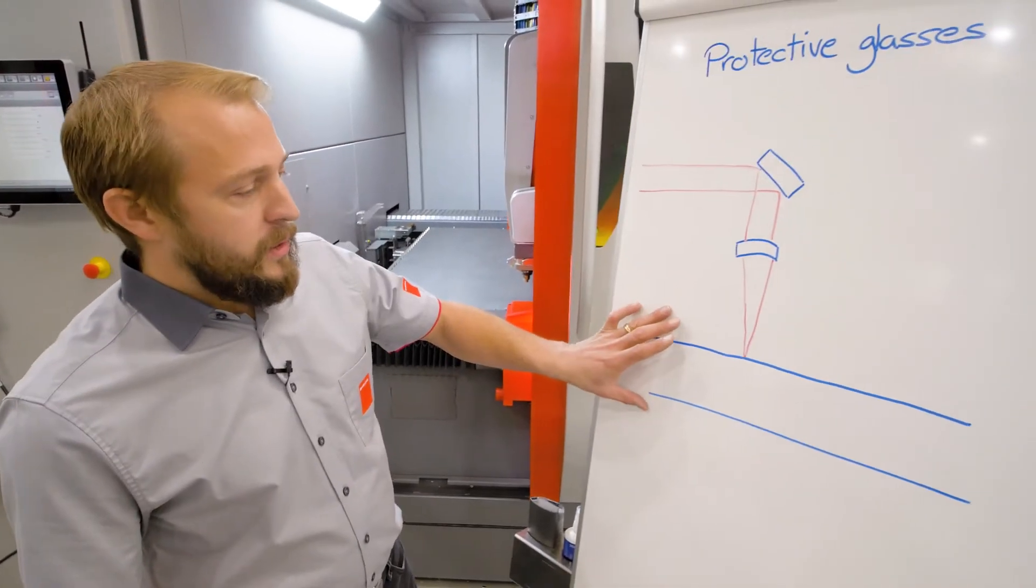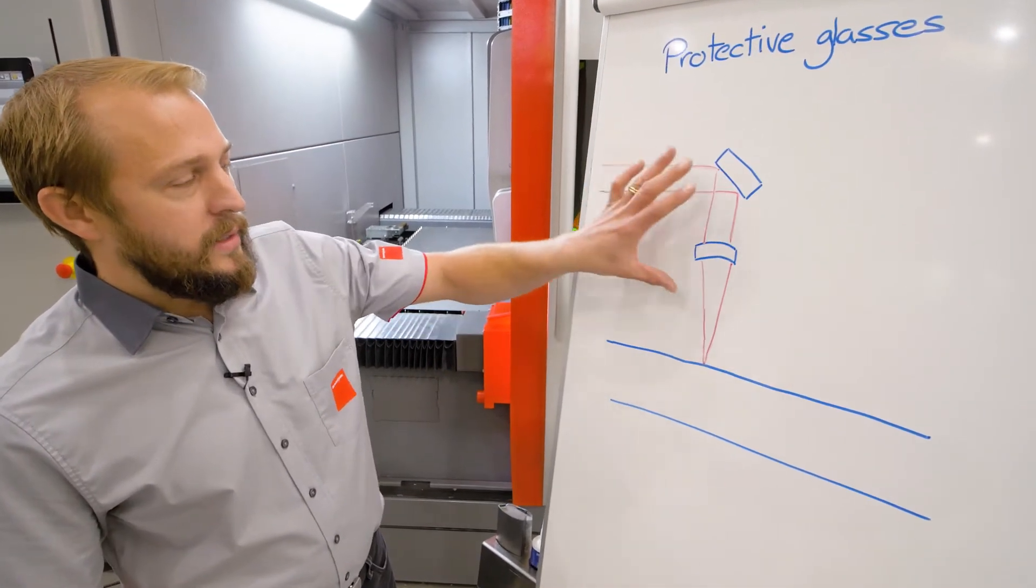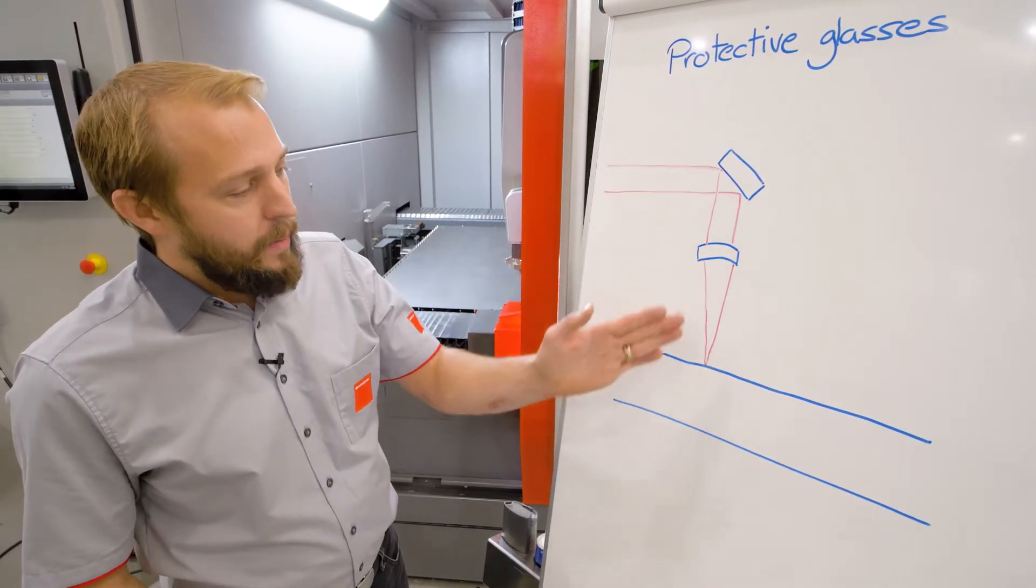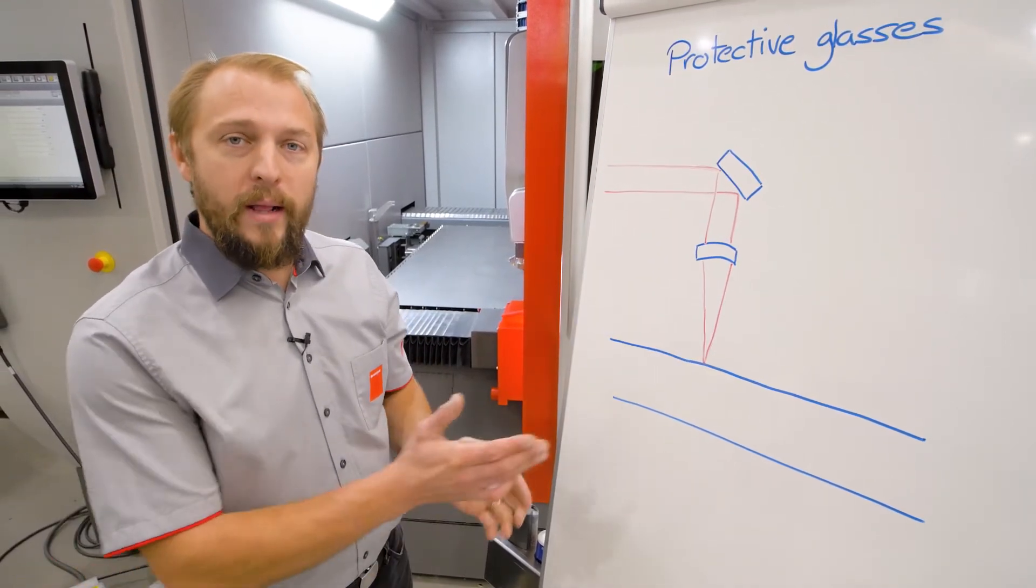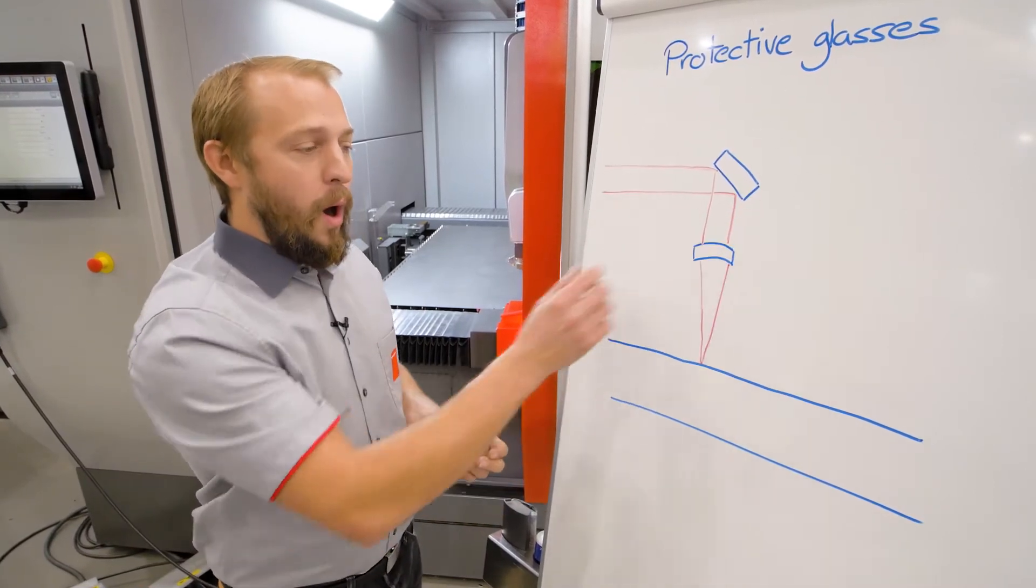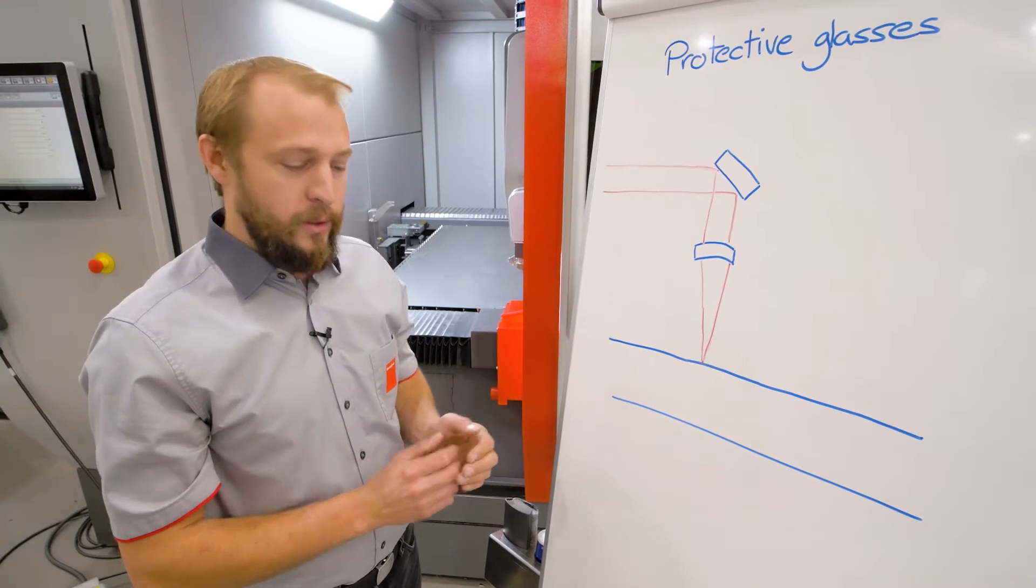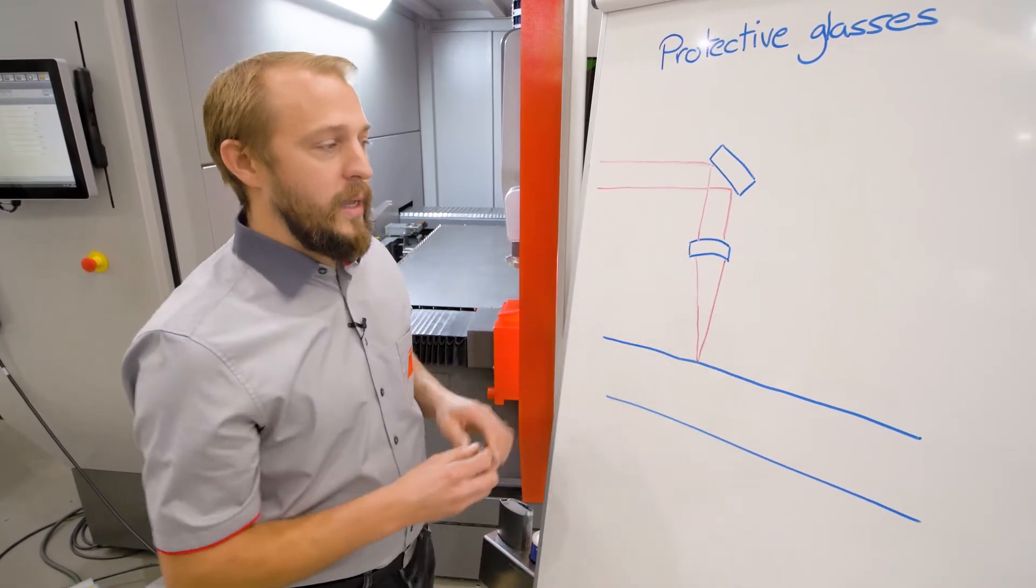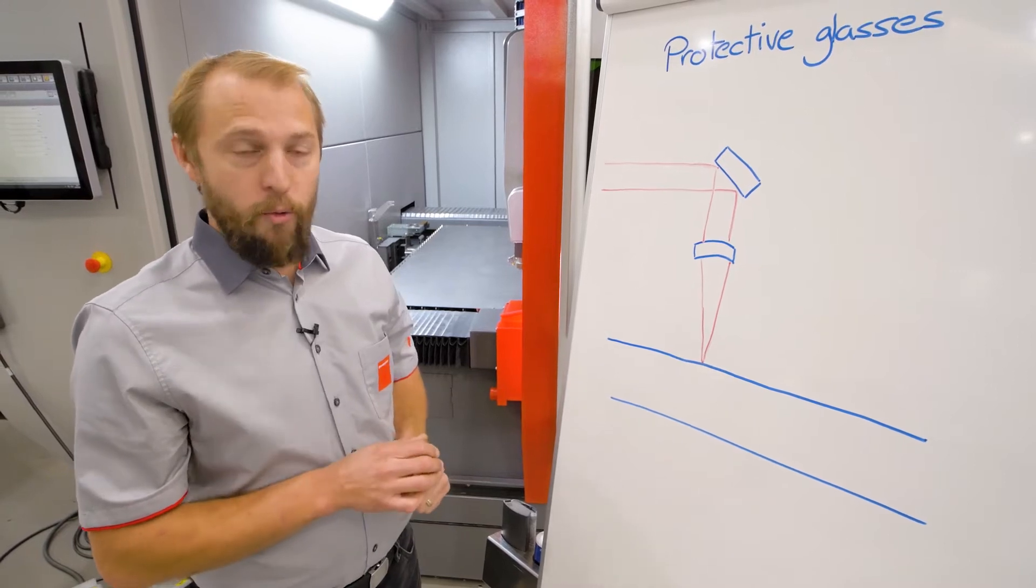So here we have some material that we're going to cut and that's our cutting head. Our beam is coming, touching the material while cutting or piercing. Material can go out of the sheet on the upper side. This material can go on our lens and spoil our optical room.